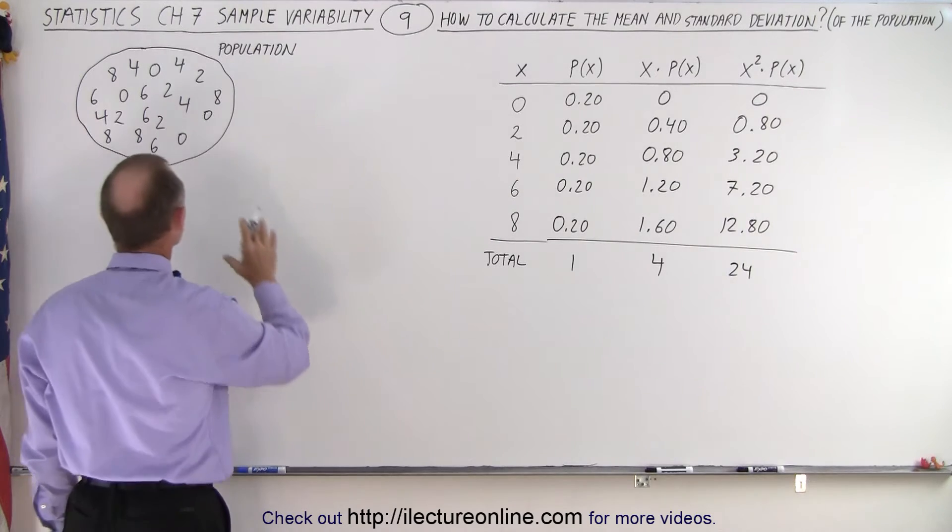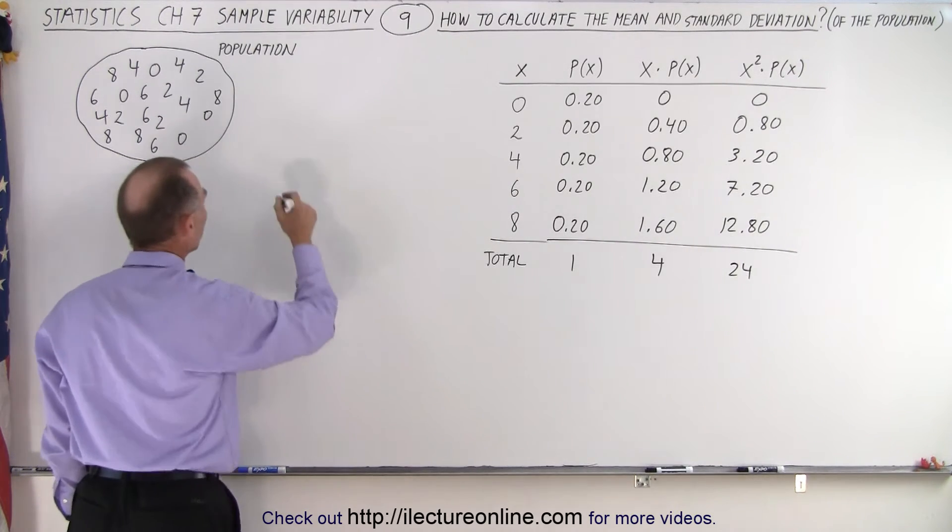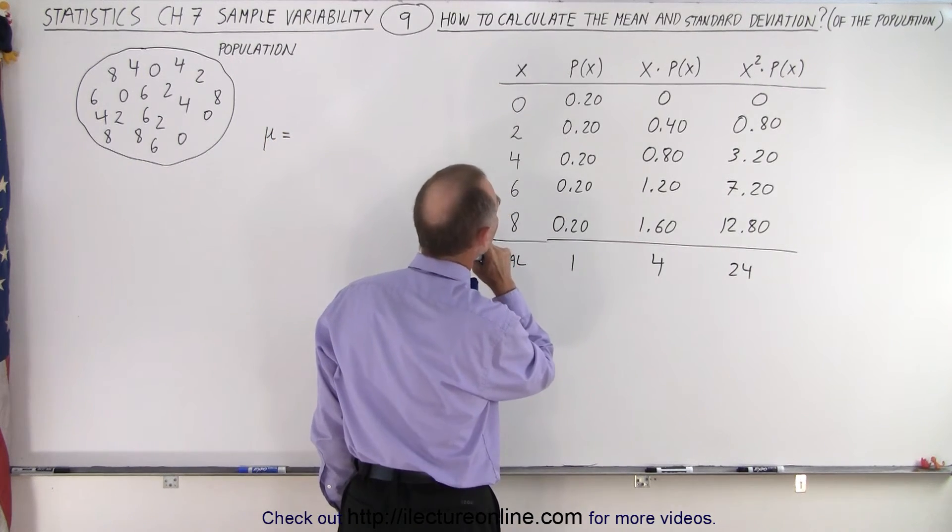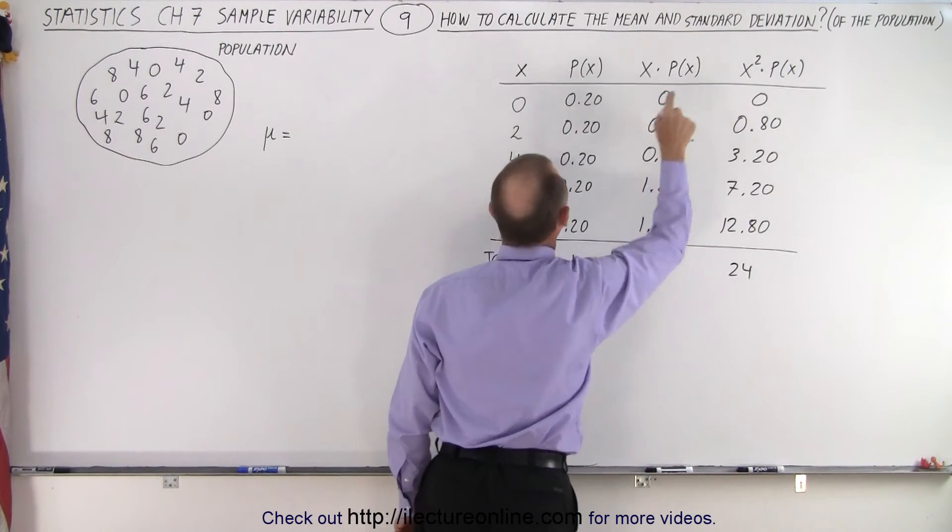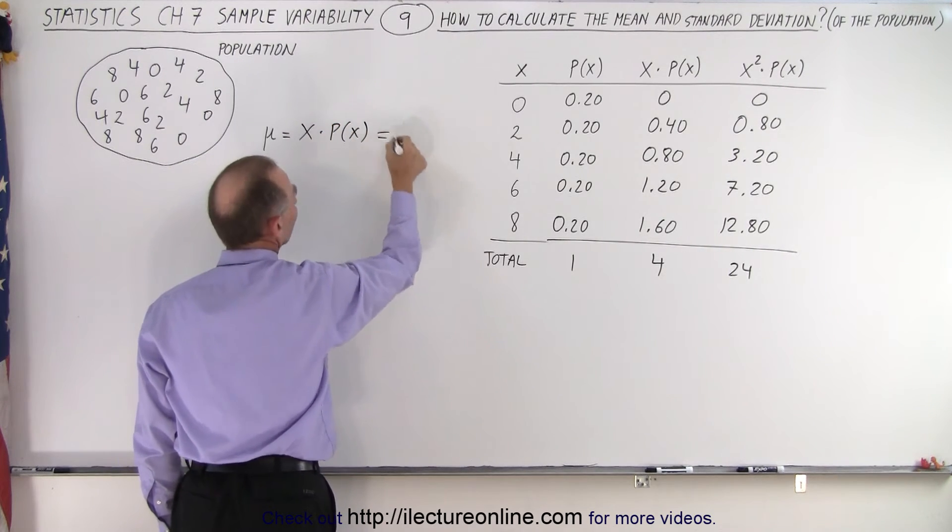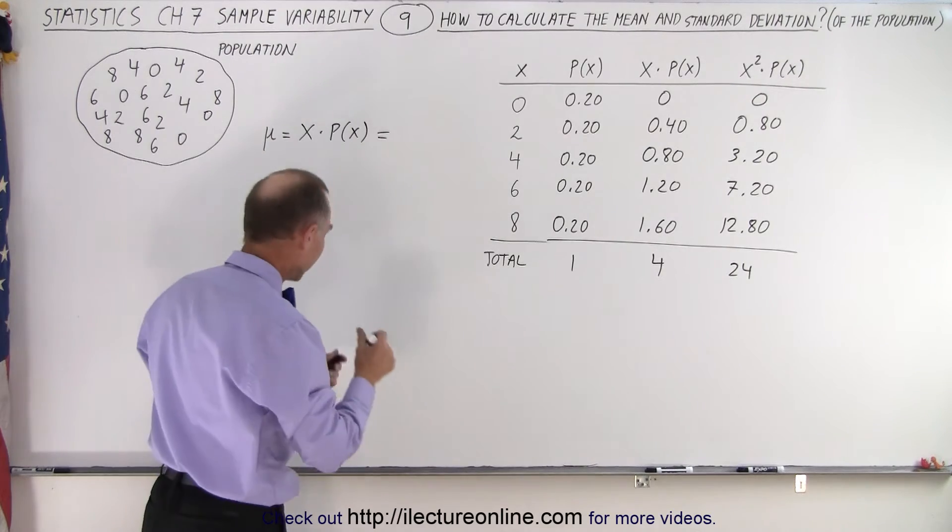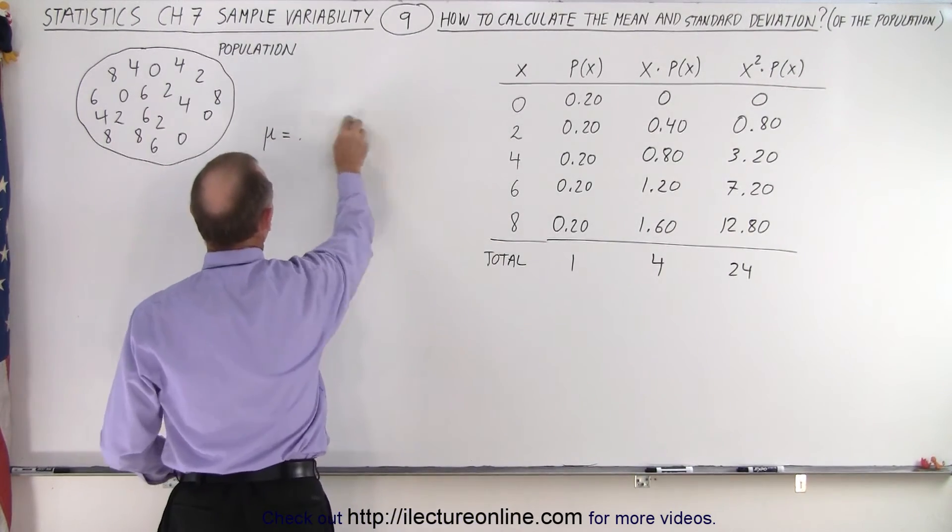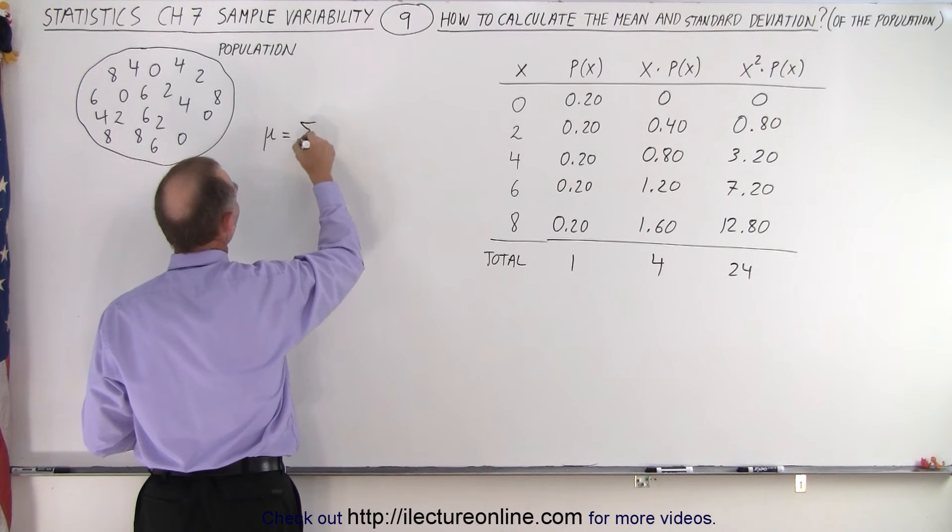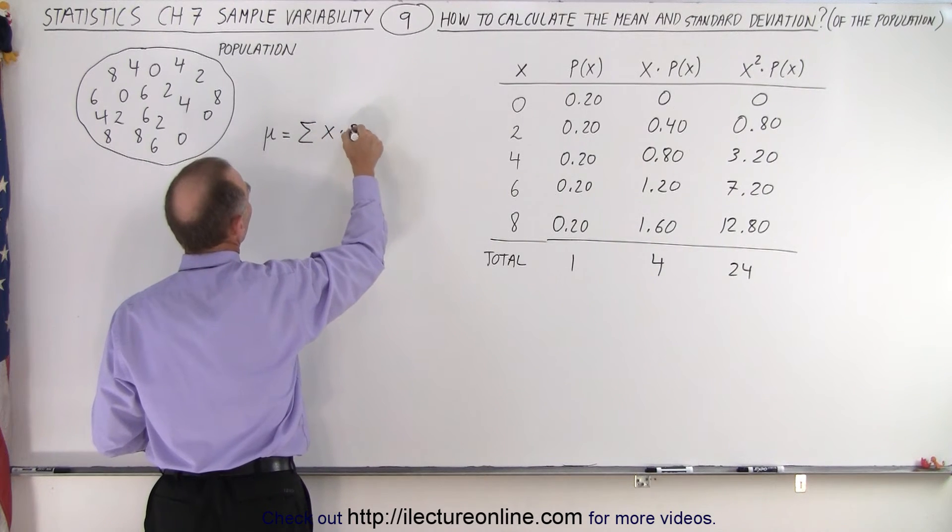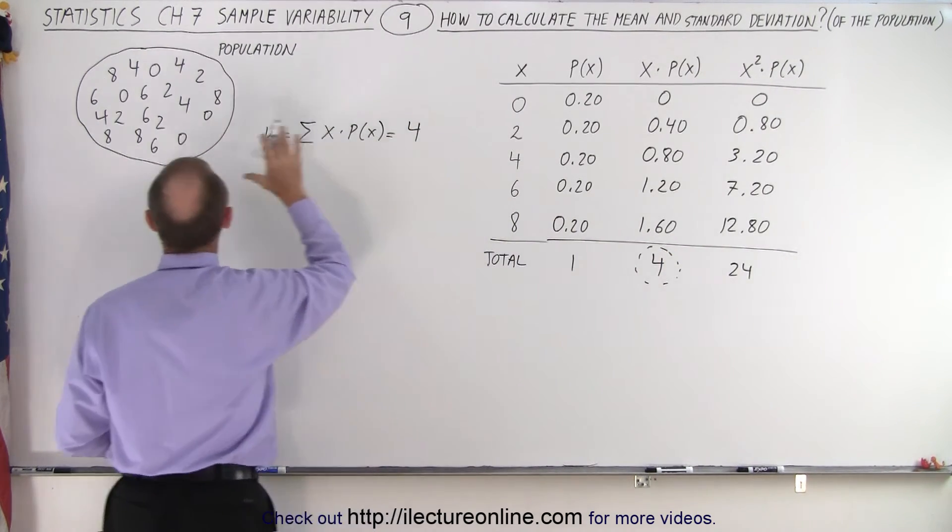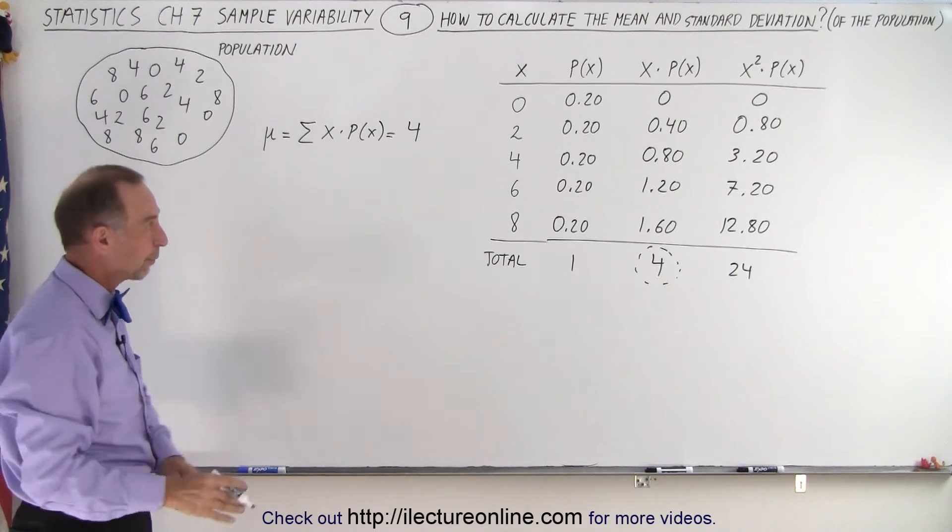Now we're ready to calculate the mean or the average and the standard deviation of the population. So the mean is equal to the product of, the product of x times the probability of x. So this is equal to x times the probability of x. So in this case, we can simply, oh, not just that. It's the sum of that. So I should put the summation there. So when we total it up, essentially we sum up all those. So in this case, we get the sum of the x's times the probability that we get the x's. So in this case, we read that off right here. That's equal to 4. So we can see here that the mean or the average of the population is equal to 4. Of course, we already knew that.